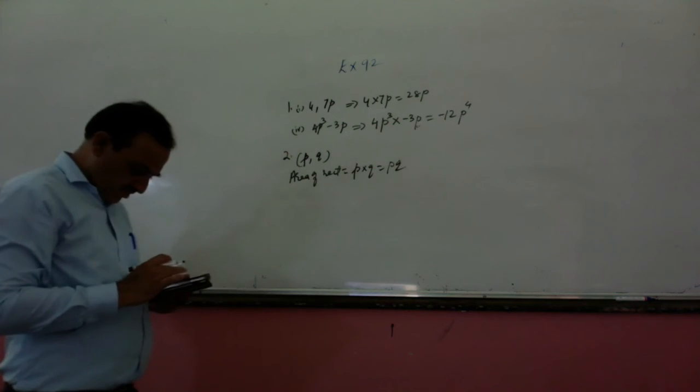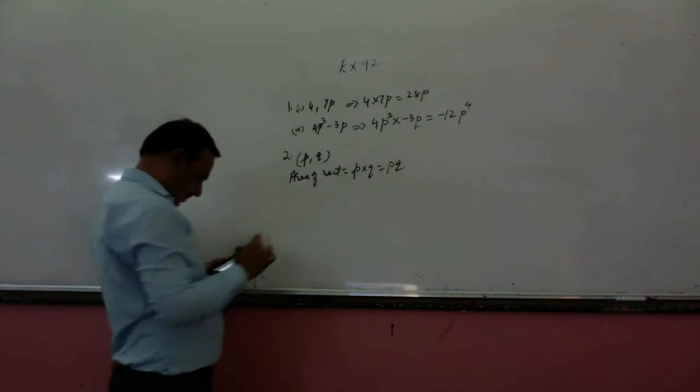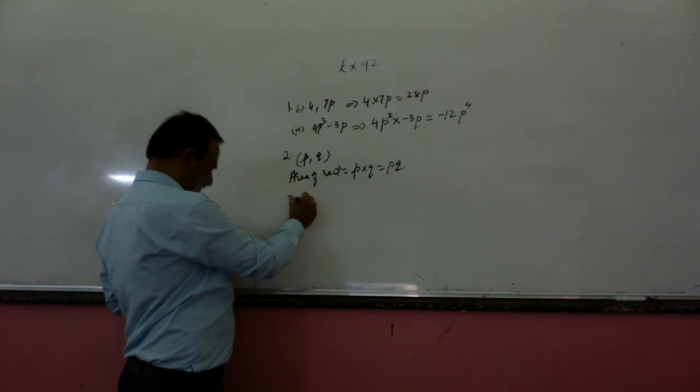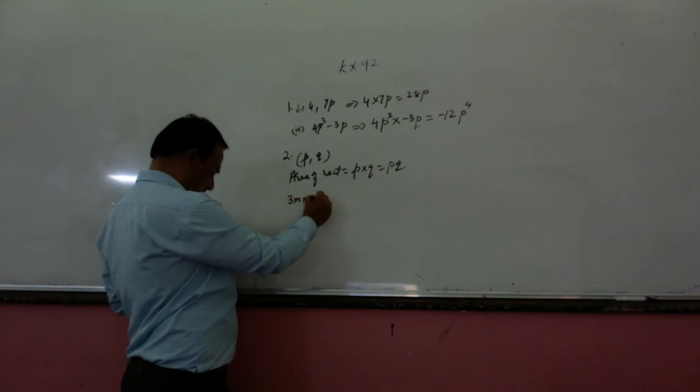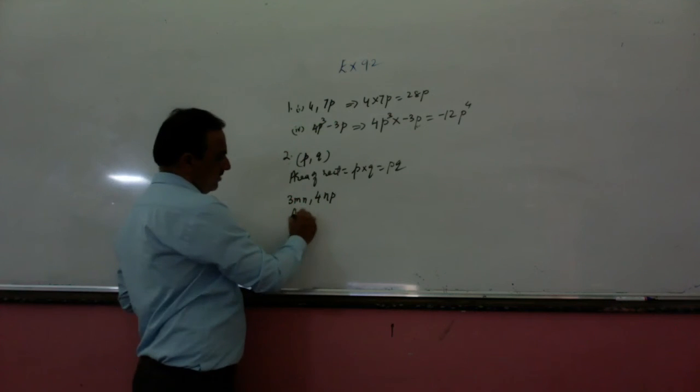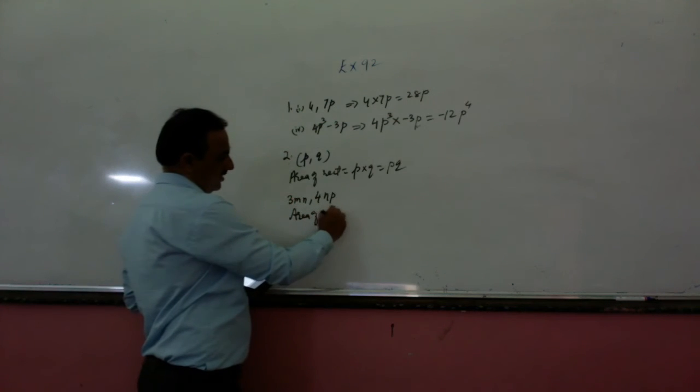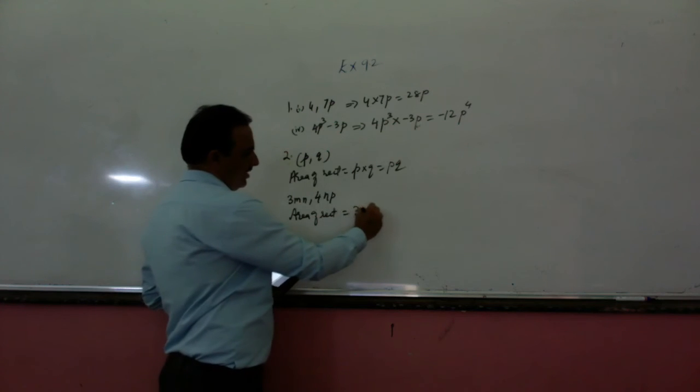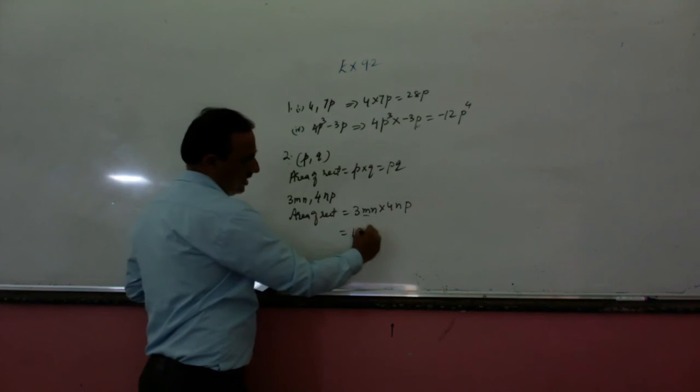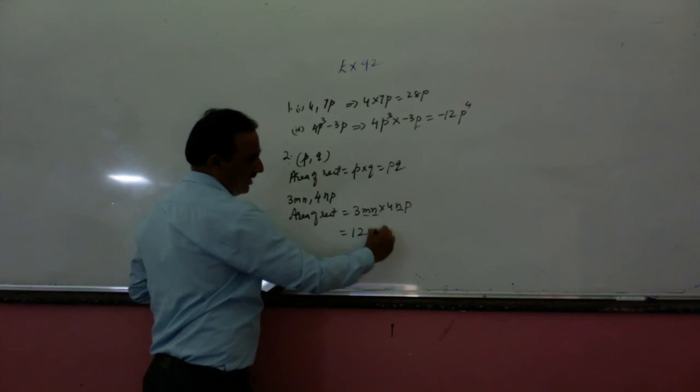Similarly we can solve the next one also. Last one: 3MN, 4N. To find the area, length and breadth multiply. Area of rectangle, then you need to multiply 3MN into 4N. So it will be 12, M is 1, N is 2, so 12MN squared.